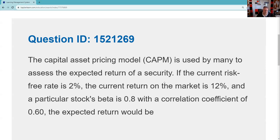If the current risk-free rate of return is 2% — that's what you get for not risking your capital — and the premise is that if we can't beat the risk-free rate, why would we invest? The current return on the market is 12%. The stock's beta is 0.80, meaning it's 80% as volatile as the market, up or down. There's also a correlation coefficient of 0.60, but that has nothing to do with answering this question — correlation is a separate issue.